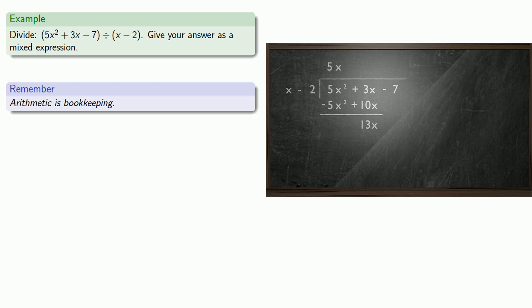Remember, arithmetic is bookkeeping. We had a minus 7, it can't just disappear. So we actually get 13x minus 7. We've gotten rid of the x squared term. Now we have to get rid of this 13x. What could we multiply x minus 2 by to get us 13x?